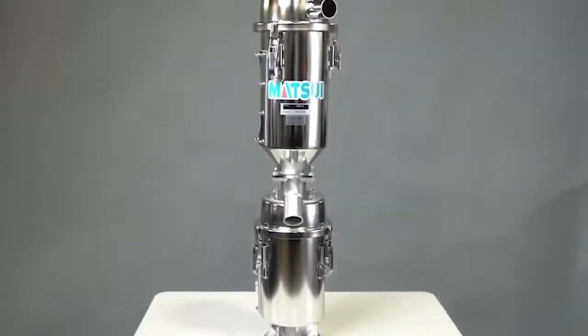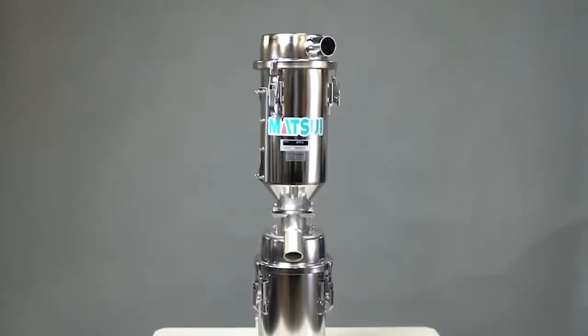The Matsui APH Aeropower Hopper is a filterless vacuum hopper that blends material at the feed throat of the injection molding machine. This is accomplished using pneumatic conveying air from a blower.